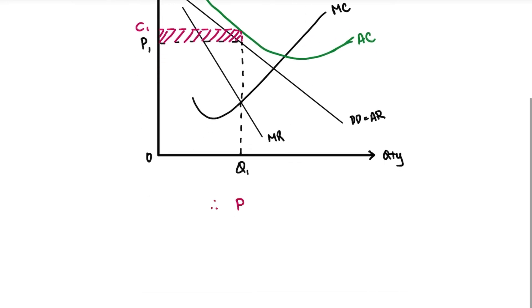So therefore, in this case, since your P, which is your price, is going to be less than your AC, and as we have learned before, P equals to your AR, AR is less than AC.